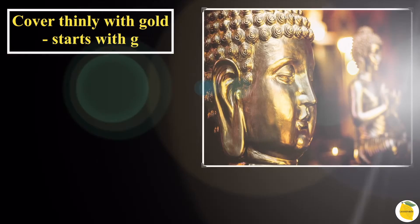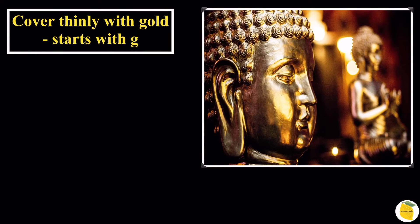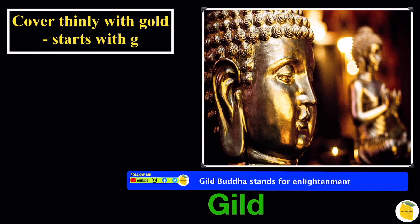Covered thinly with gold — starts with G. In this picture we can see two gold Buddhas, and the word is going to be 'gilt'. The sentence is: the gilt Buddha stands for enlightenment. The previous slide is 'simmer'.